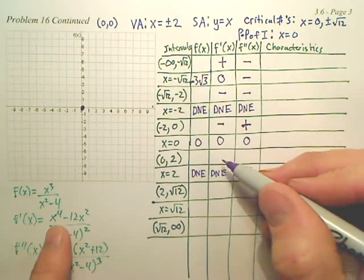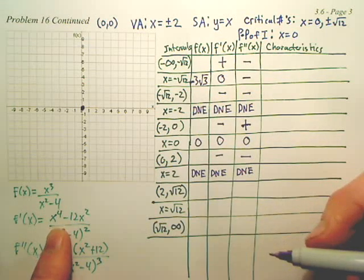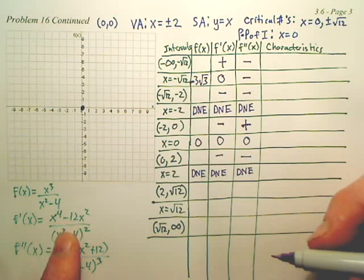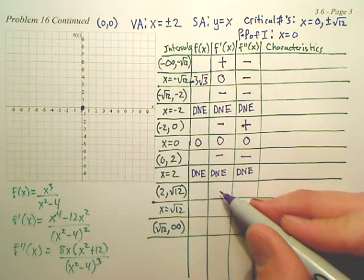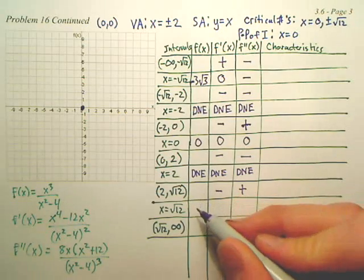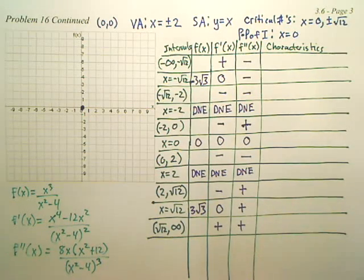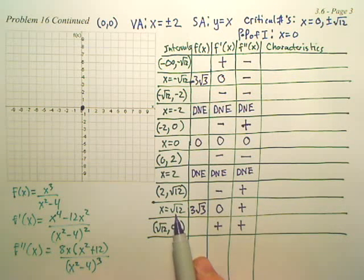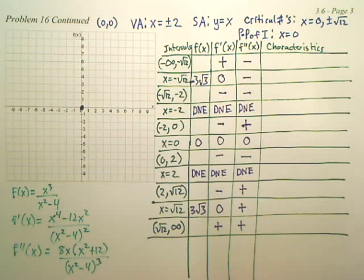When you plug in positive one to the first derivative, it's negative, and the second derivative is also negative. For the interval from 2 to square root 12, we'll probably plug in three. When you plug in positive three, just trust me on the values. For the last interval, I plugged in square root 12, and for beyond that I probably plugged in four. You're plugging into the first derivative and the second derivative, and all you're caring about is if it's positive or negative.